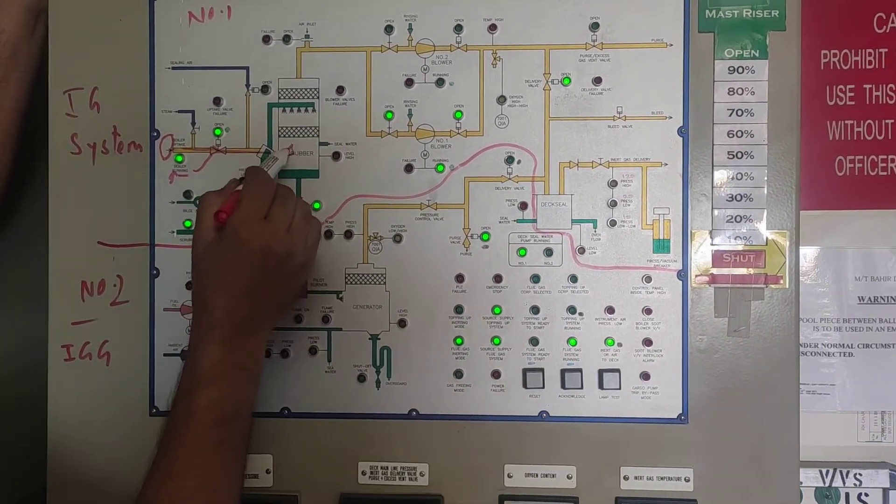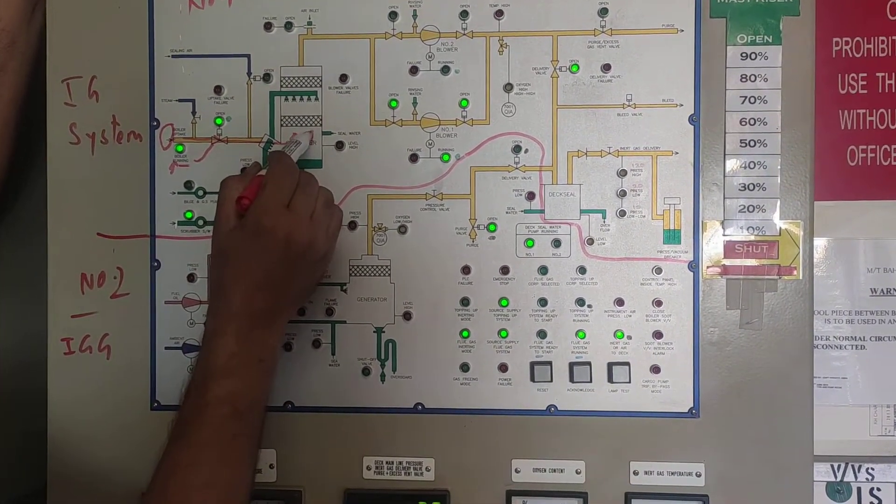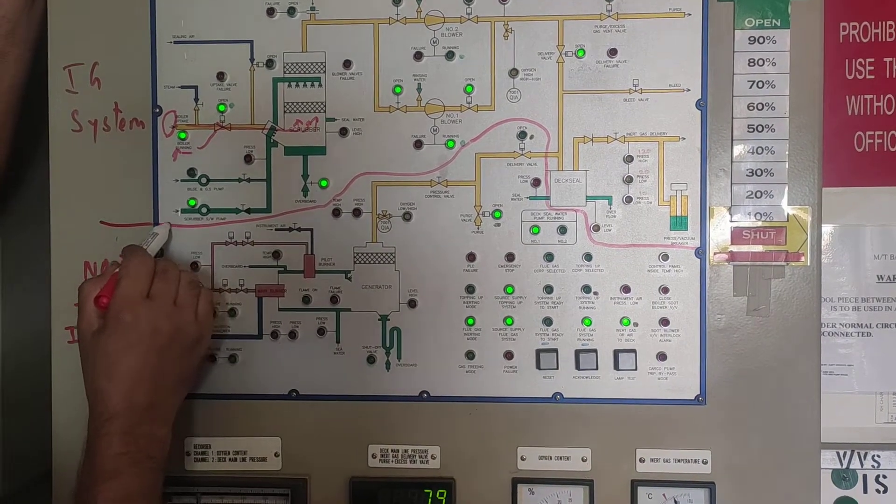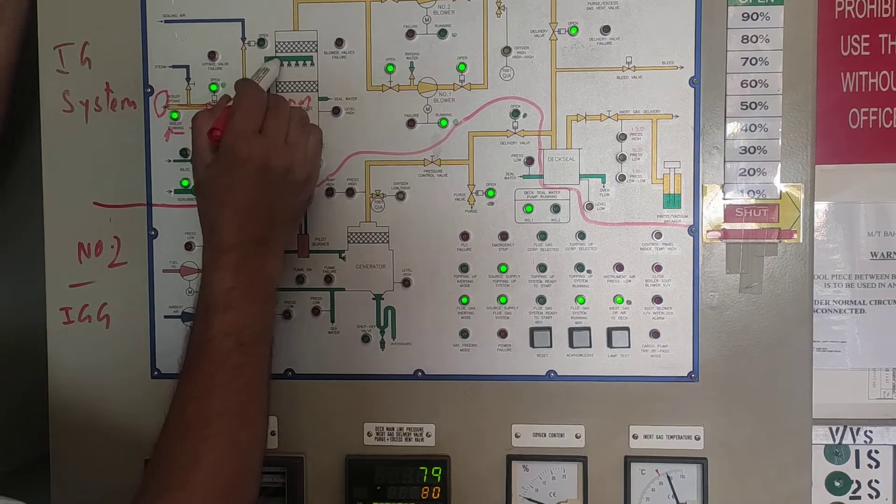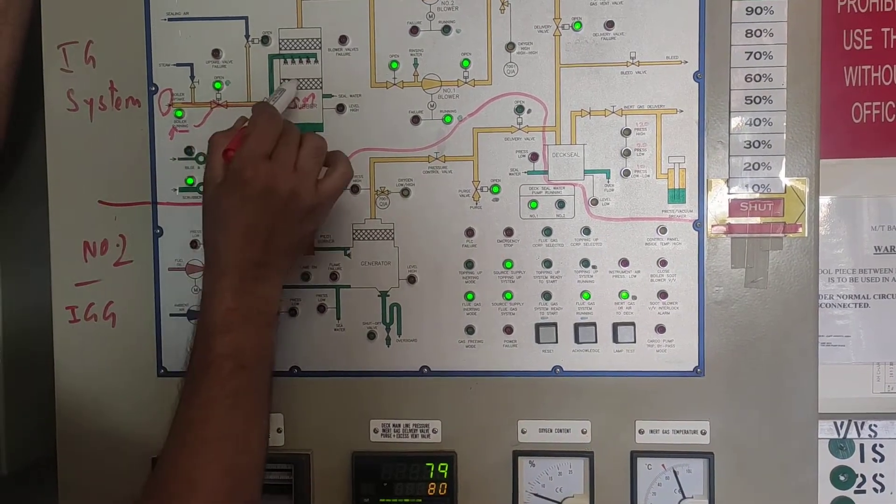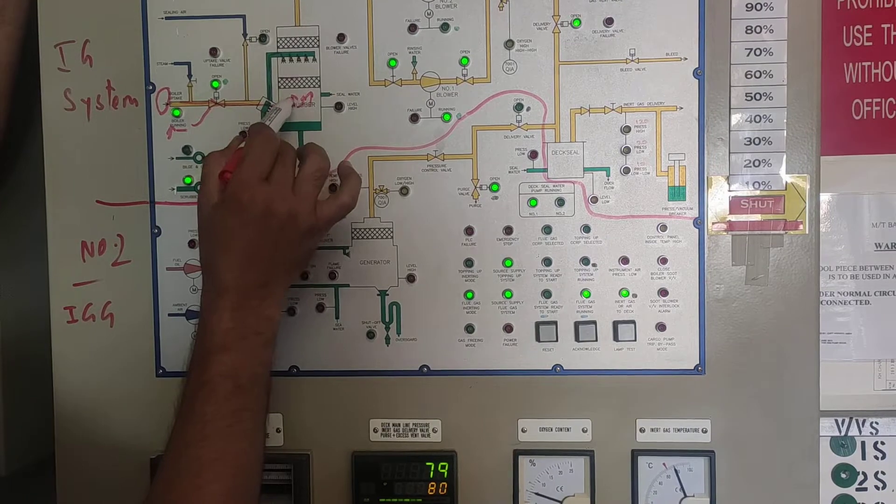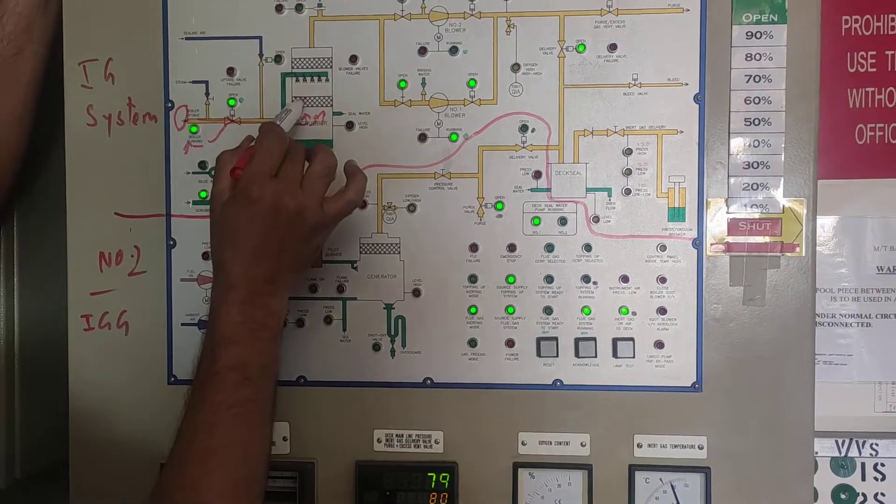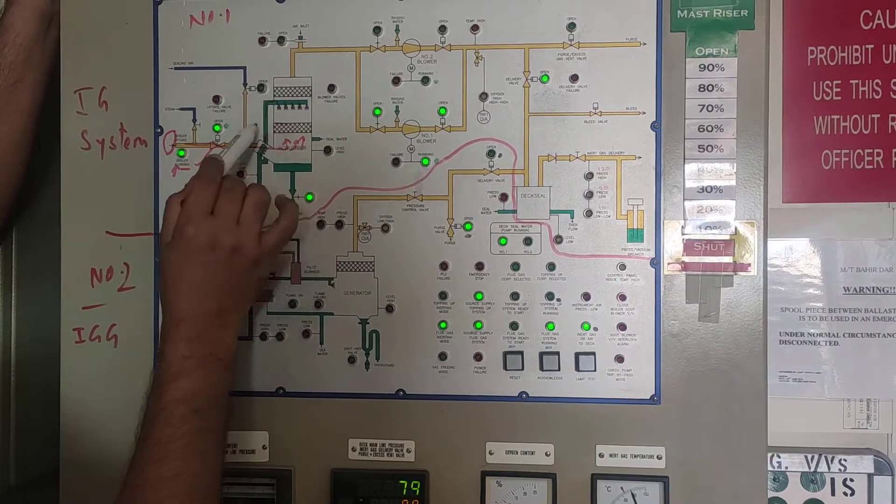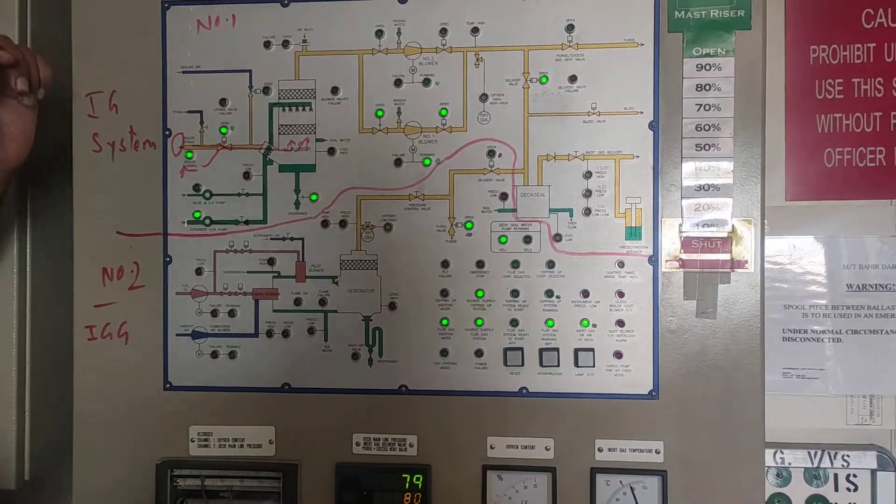It is going to the scrubber from here. Hot gases are released into the scrubber. At the same time a scrubber pump is running here. From the scrubber pump water is coming out and falling like a sprinkler. There is this demister patch. This hot gases here are washed by this water. They passed through this demister patch where the soot is taken out.